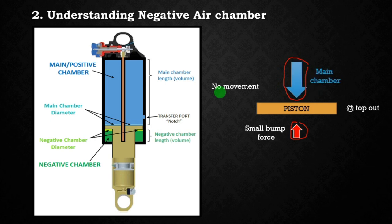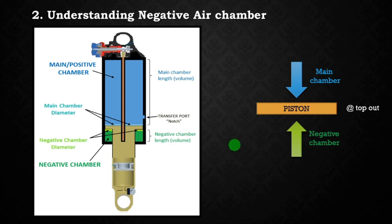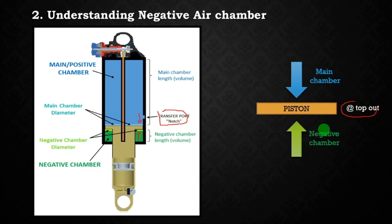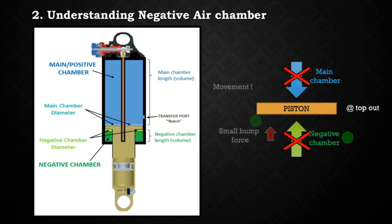In that scenario, the shock will not move, which translates into stiffness and a harsh ride. With the negative air chamber, air tries to push the piston up while the positive main chamber pushes it down. The pressure of the negative chamber is controlled by a transfer port. Positioned correctly, at top-out the force from the negative chamber exactly cancels the force from the main chamber, so a small bump force will cause the piston to move. The negative chamber therefore increases the initial sensitivity of the shock at top-out.